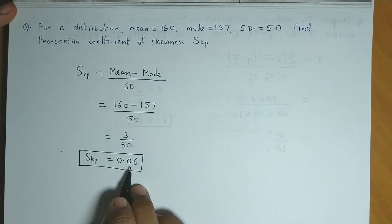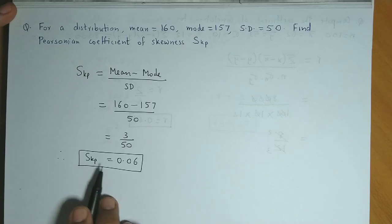Now this is a positive value. This is greater than 0. Now this indicates that the distribution is positive skewness. So here the value of SKP is 0.06.